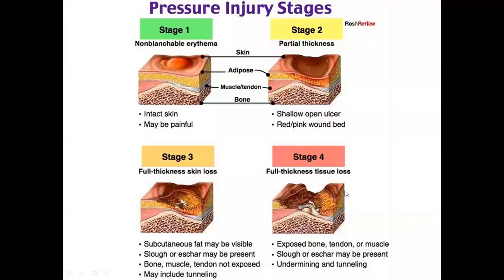Another type of ulcer is called unstageable. Looking at the picture, stage 1 is called non-blanchable erythema, stage 2 is partial thickness, stage 3 is full thickness skin loss, and stage 4 is full thickness tissue loss.